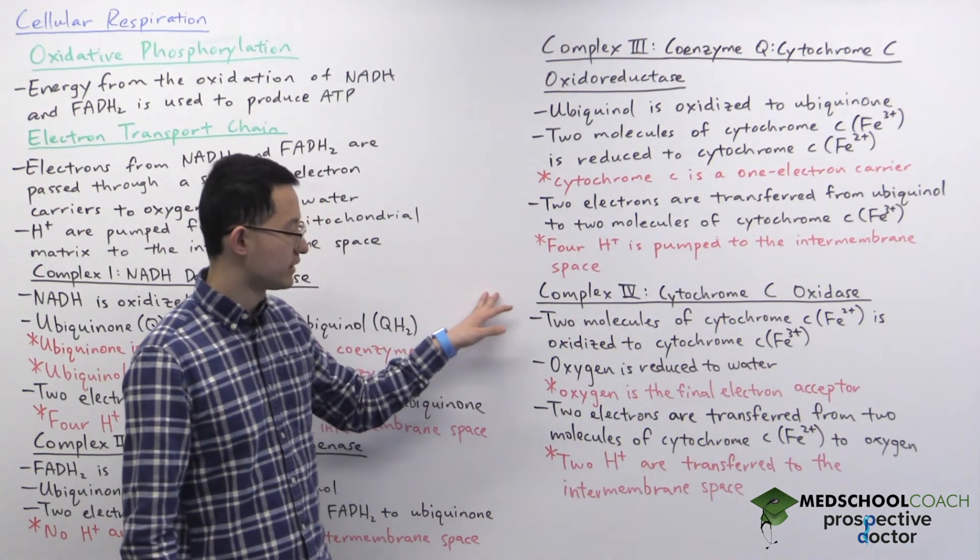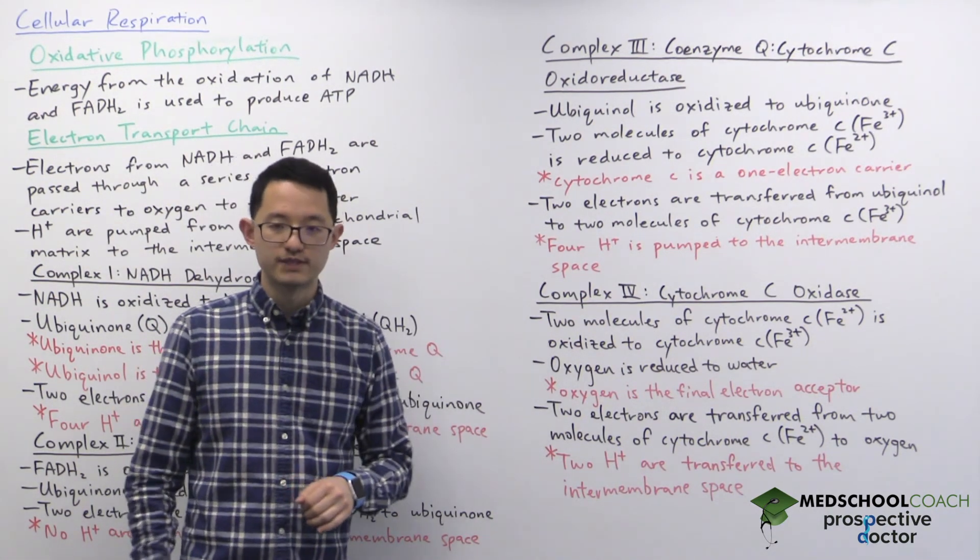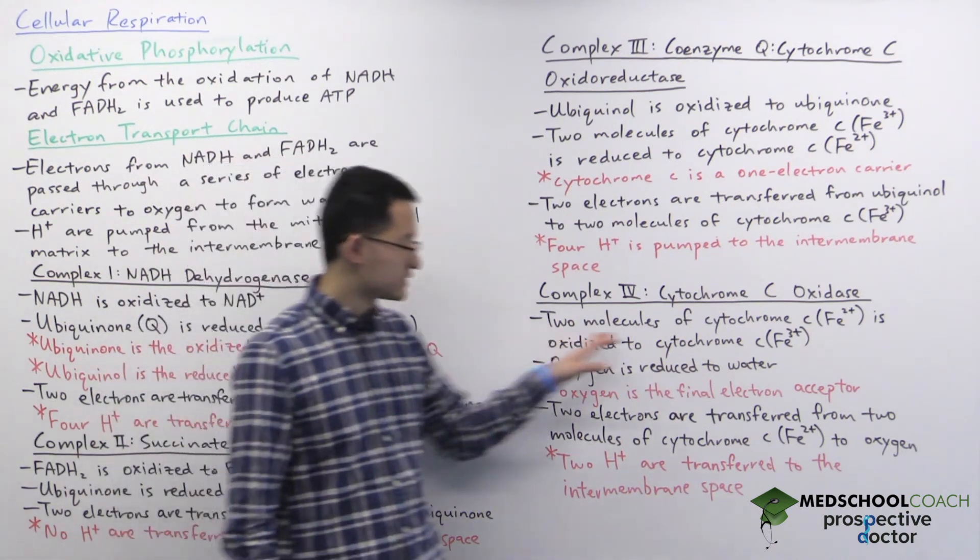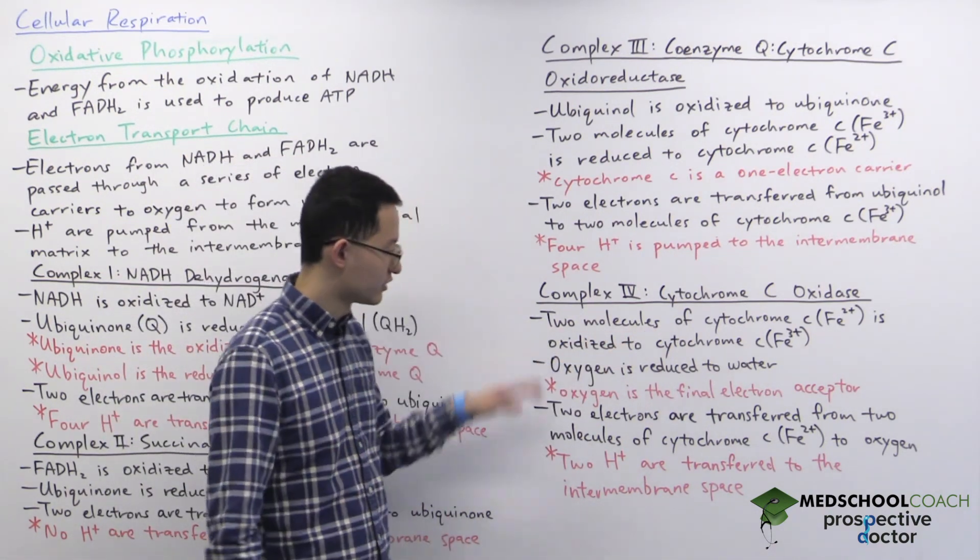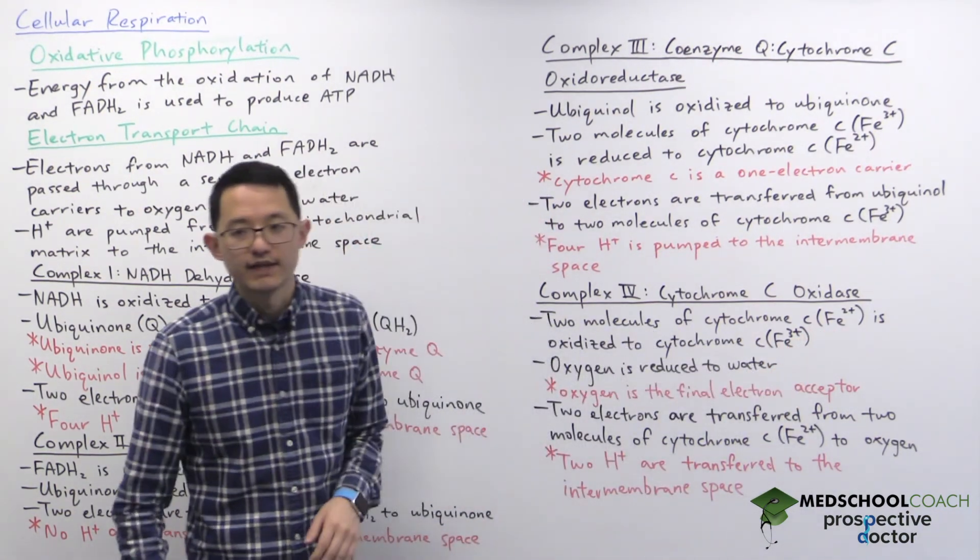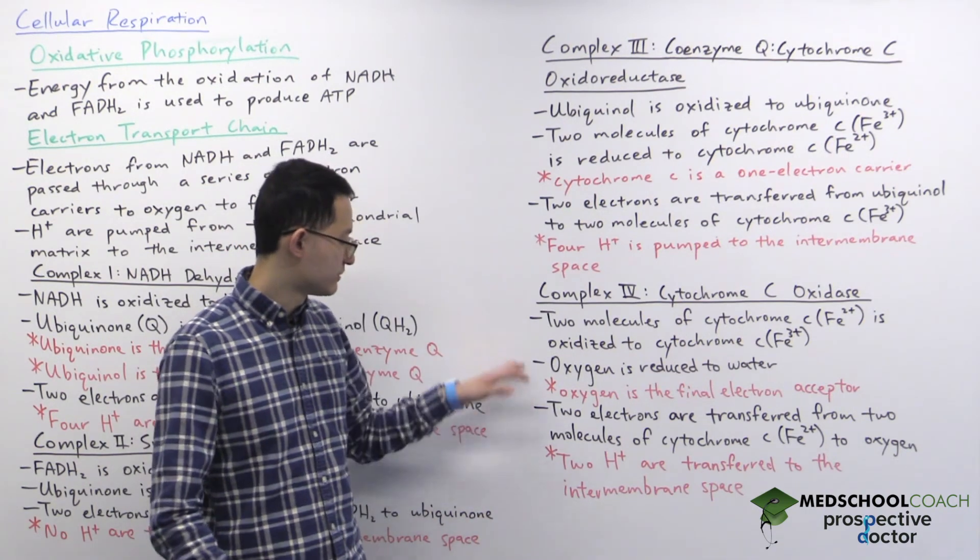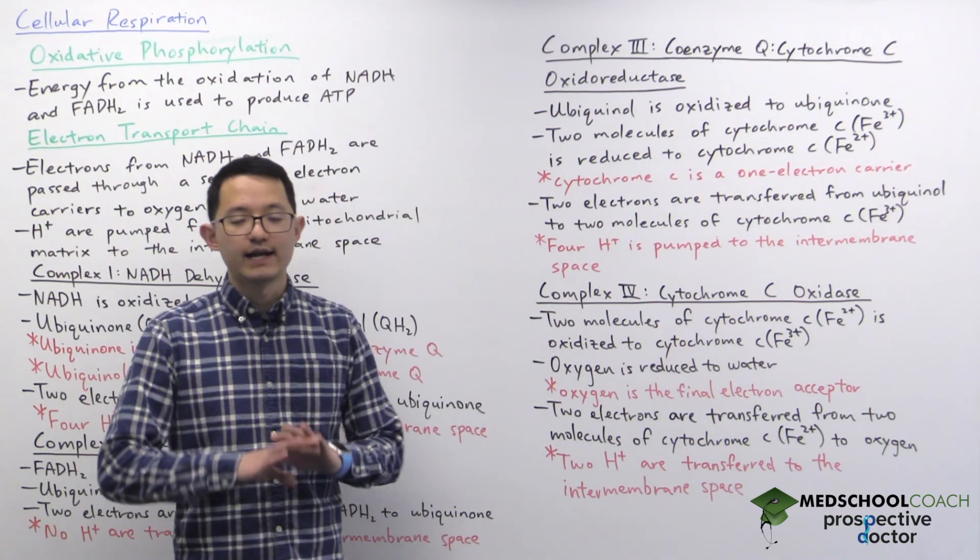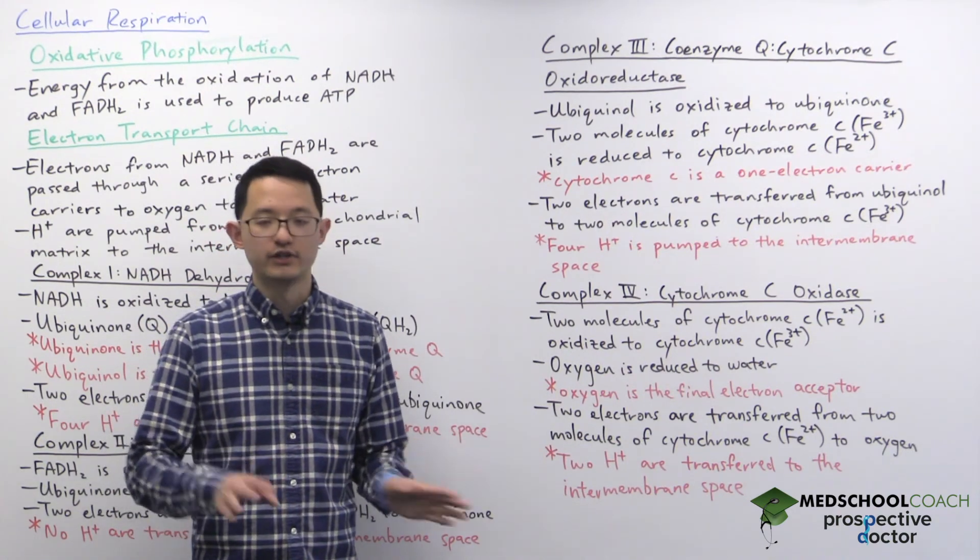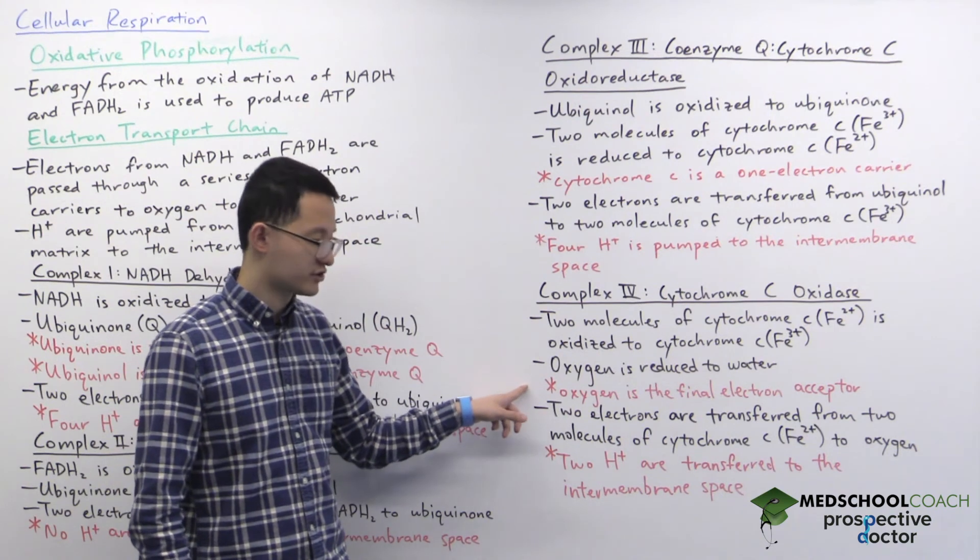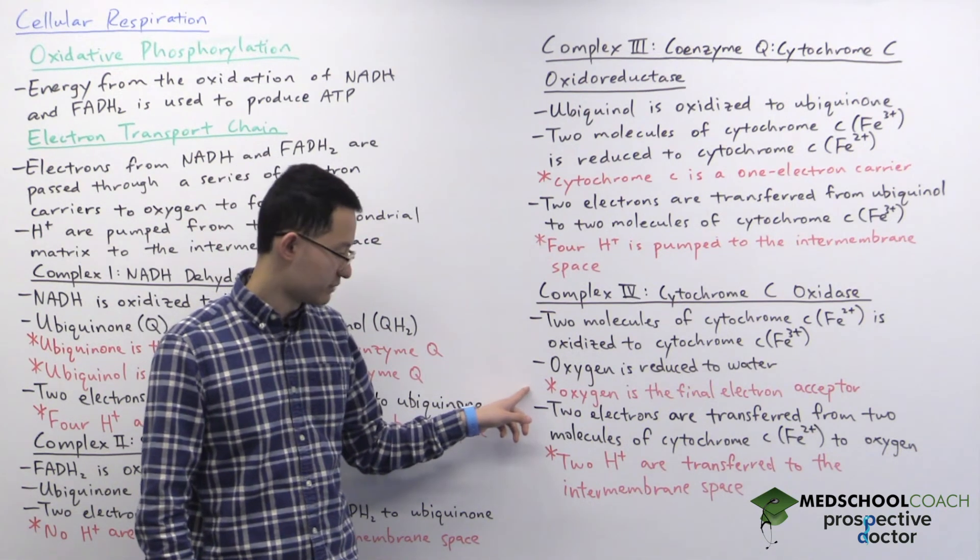So finally we have complex 4, which is also called cytochrome C oxidase. It's well named because here cytochrome C, two of these molecules, are going to be oxidized from Fe2+ to Fe3+. And these two electrons produced are going to be used to reduce oxygen to water, and that's the last reduction-oxidation reaction. And that's why we call oxygen the final electron acceptor.